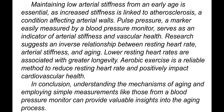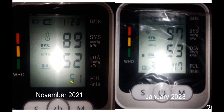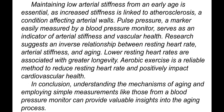Aerobic exercise is a reliable method to reduce resting heart rate and positively impact cardiovascular health. I previously did cycling — 60 to 100 kilometers, five days a week. Now I do around two hours of aerobic exercise per day combined with high-intensity interval training and strength training to grow muscles. It works — I can see muscles are growing. Aerobic exercise can be recommended to improve longevity.